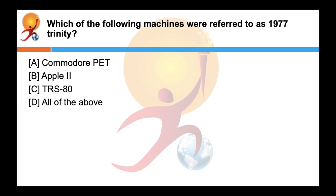Which of the following machines was referred to as 1977 Trinity? The word Trinity stands for 3. The correct answer is D all of the above. Commodore PET was the first successful mass marketed personal computer. Apple II and also TRS-80 altogether was referred to as the 1977 Trinity.